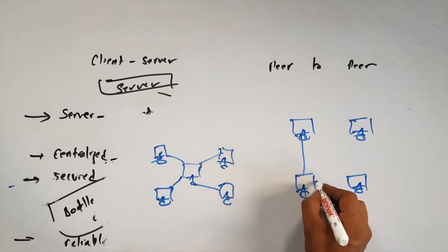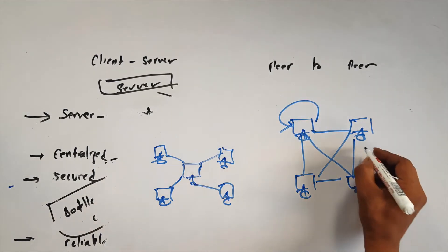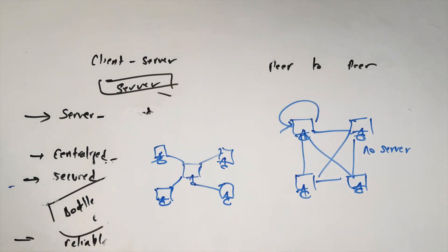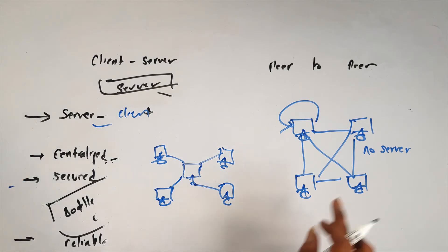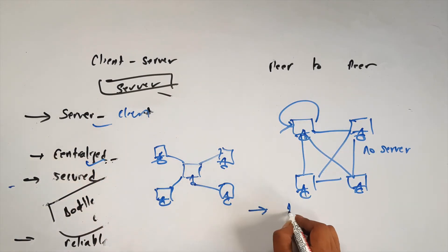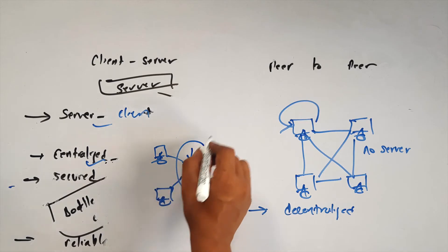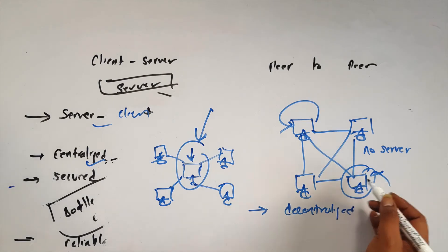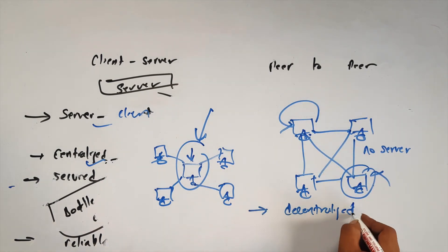In peer-to-peer architecture, unlike client-server, all the computers are interconnected with each other without any central server. Every computer in the network behaves as both a client and a server. Users do not have to request services from a single server — each node provides and consumes services. There is no centralized server; the network is decentralized.